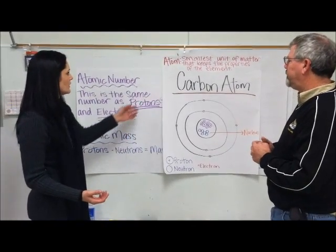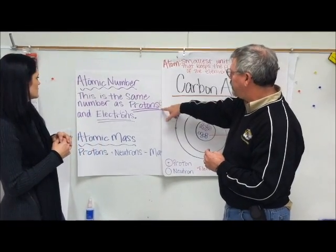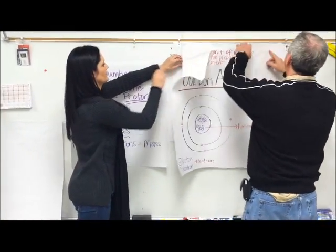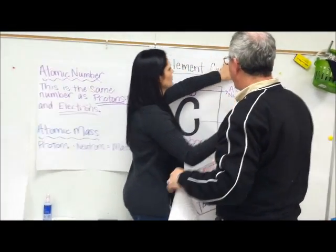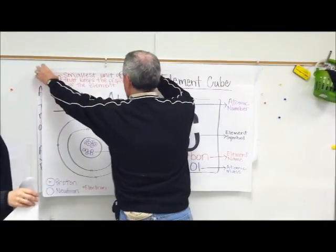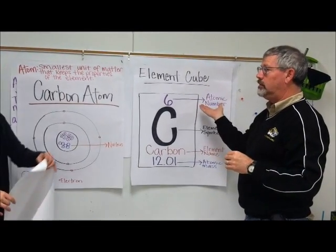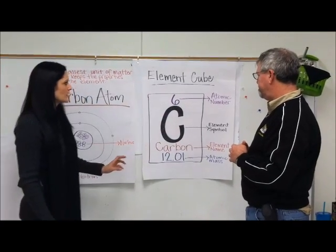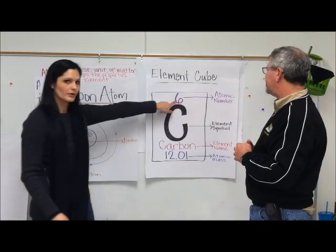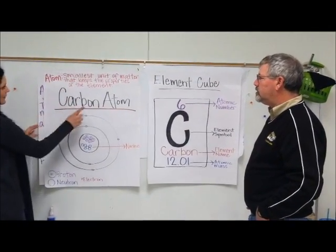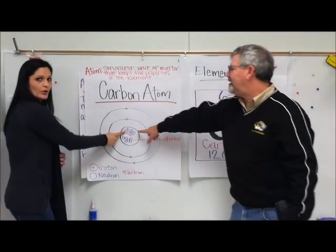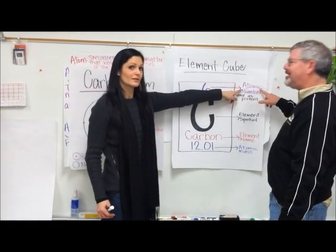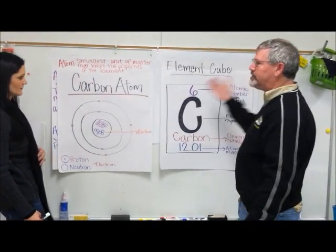So protons and electrons are the same number, and that's the atomic number. What is the atomic number? Let's look at this picture. We've all seen this before — this is an element cube, and we would find that on the periodic table. The atomic number, six, is the same as the number of protons. So the atomic number is the number of protons. Six protons — atomic number six.